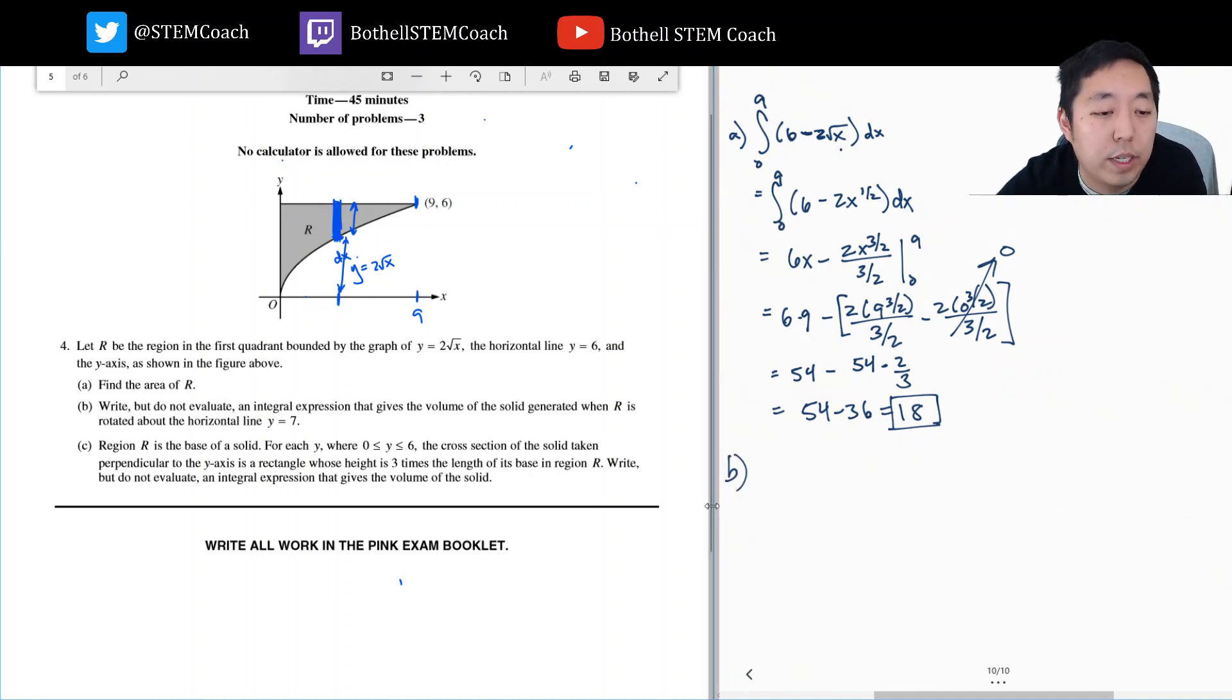Write, but do not evaluate, an integral expression that gives the volume of the solid generated when R is rotated around the horizontal line y equals 7.